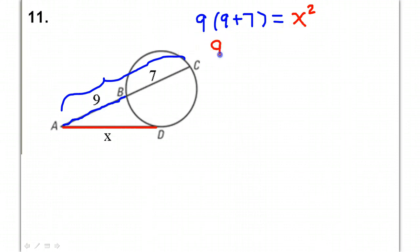Well, this is just 9 times 16 equals x squared. So that tells me that x squared equals 144.